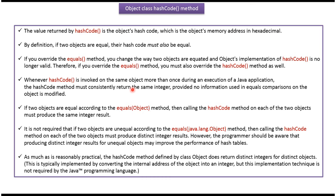Whenever the hashcode method is invoked on the same object more than once during the execution of a Java application, the hashcode method must consistently return the same integer. If two objects are equal according to the equals method, then calling the hashcode method on each of the two objects must produce the same integer result. That is about the Object Class hashcode method — thanks for watching.